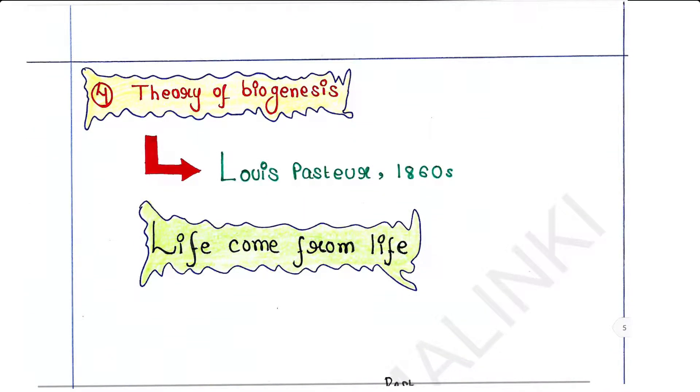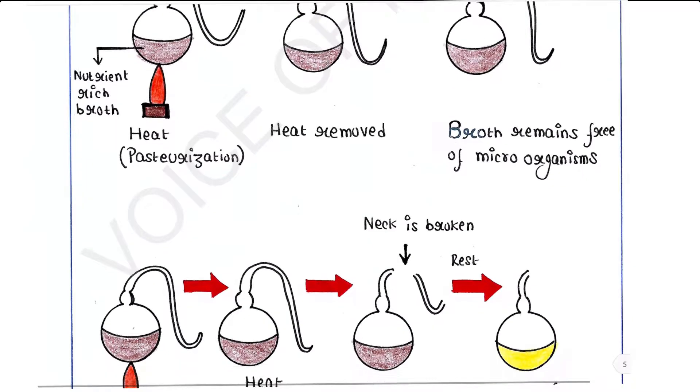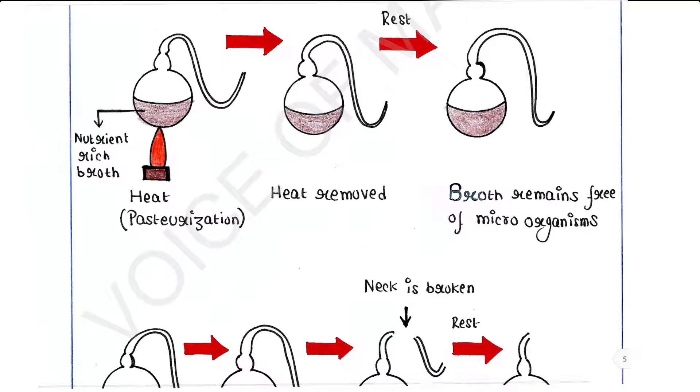Next theory is theory of biogenesis. This theory was proposed by Louis Pasteur in 1860s. This theory states that life comes from life.